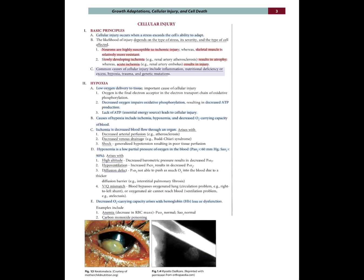Hypoxia: Low oxygen delivery to tissue is an important cause of cellular injury. Oxygen is the final electron acceptor in the electron transport chain of oxidative phosphorylation. Decreased oxygen impairs oxidative phosphorylation, resulting in decreased ATP production. Lack of ATP, which is an essential energy source, leads to cellular injury. Causes of hypoxia include ischemia, hypoxemia, and decreased oxygen-carrying capacity of blood. Ischemia is decreased blood flow through an organ, arising with decreased arterial perfusion (e.g., atherosclerosis), decreased venous drainage (e.g., Budd-Chiari syndrome), and shock — generalized hypotension resulting in poor tissue perfusion.